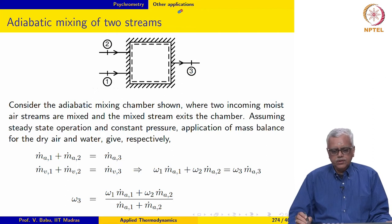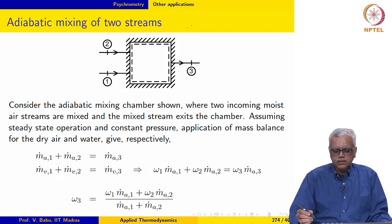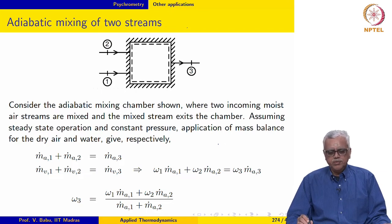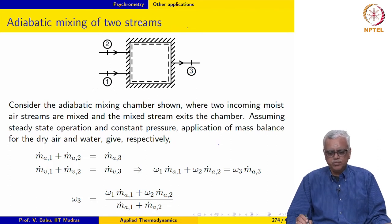In this lecture, we are going to look at three applications involving psychrometric principles. The first one is adiabatic mixing of two streams, which may be considered as an application that comes in HVAC. The other two applications may be classified as other applications of psychrometric principles.